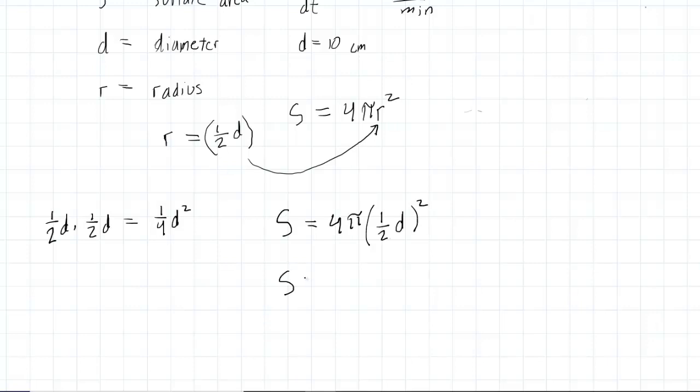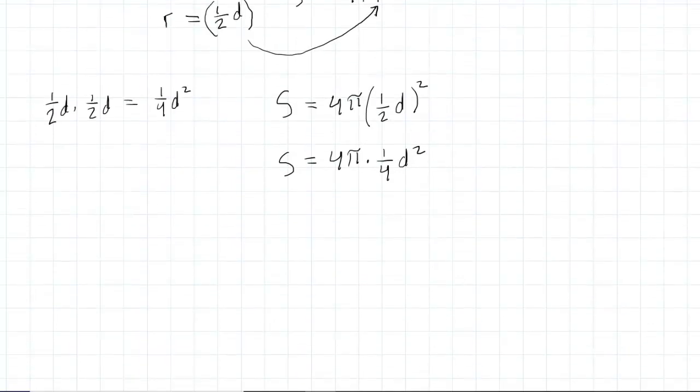So we'll come back in here and simplify by doing 4π multiplied by 1/4 d squared. We can next multiply the 4π by the 1/4. If it helps, you might want to put a 1 under here, and then when you multiply these fractions highlighted, you're going to multiply the numerators and multiply the denominators.